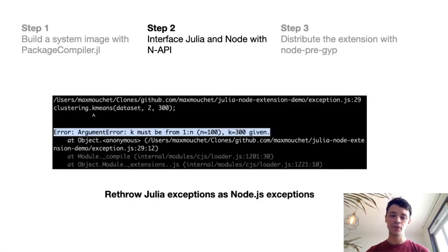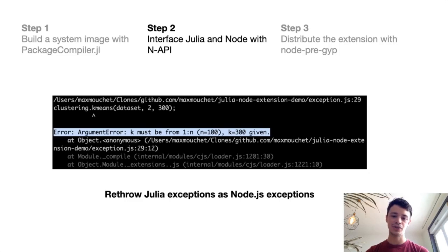Another interesting thing you can do is catch Julia exceptions in your extension and throw them as Node.js exceptions, so you can directly catch Julia exceptions in your JavaScript code. This is very useful for debugging.